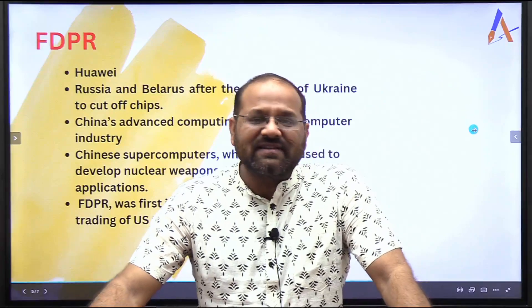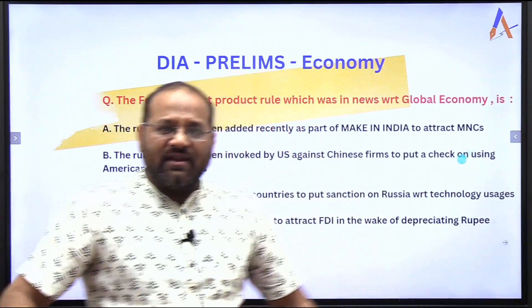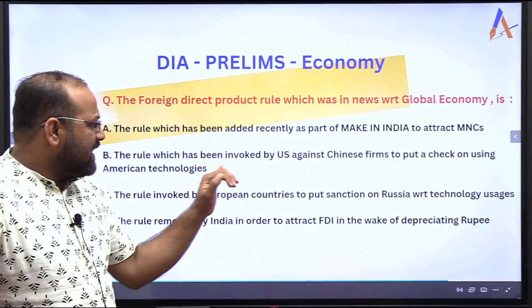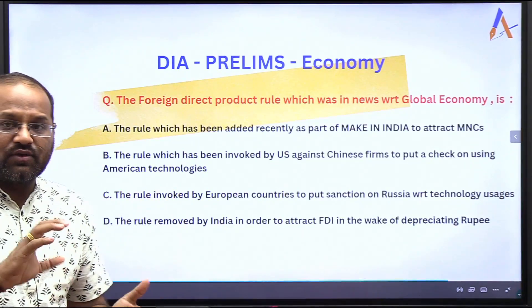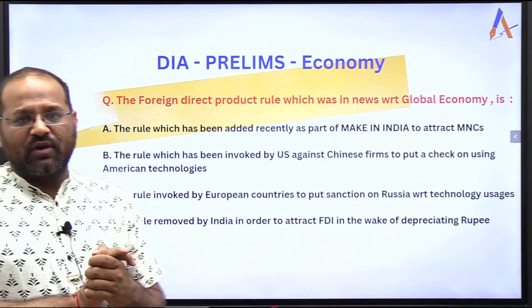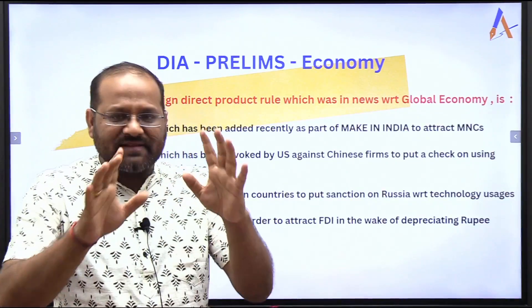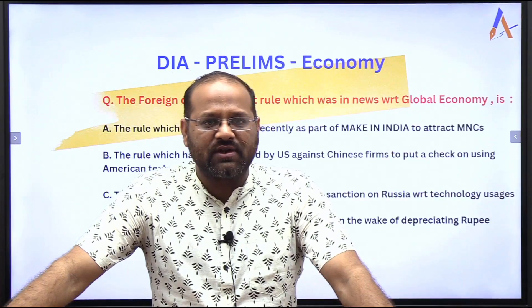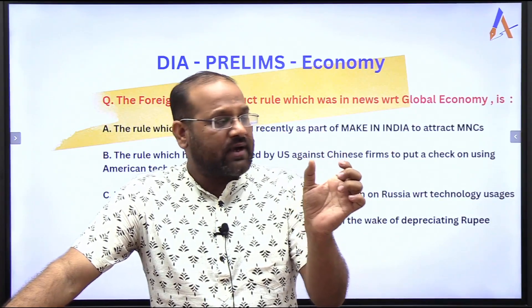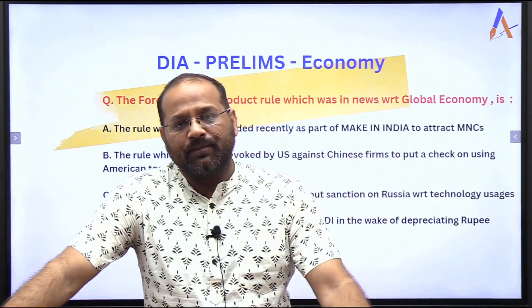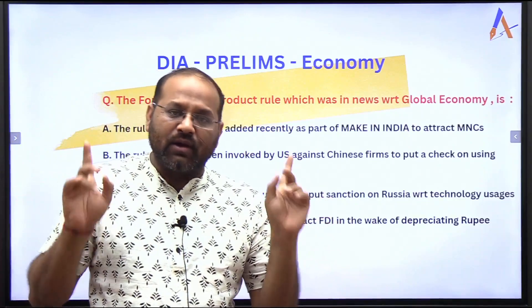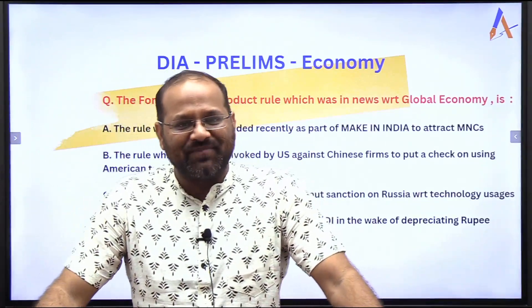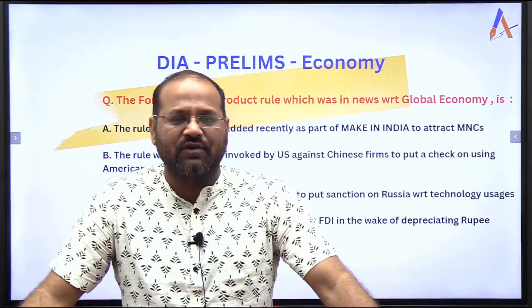So because of this, FDPR is in the news. Looking at the question again, the correct answer is Option B — the rule invoked by the U.S. against Chinese firms to put a check on using chips produced with American technologies. The idea is that you remember this: whenever a question on global economy comes up about this rule, you should know what the Foreign Direct Product Rule is about. It has no direct connection to India — it is related to global economy, and that context is what we should remember.